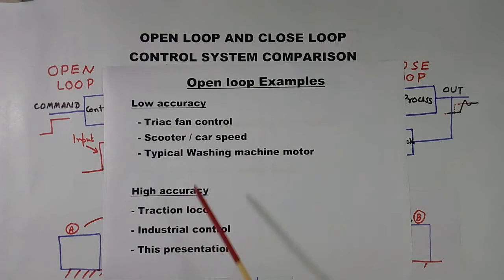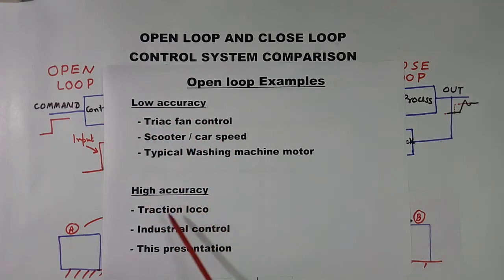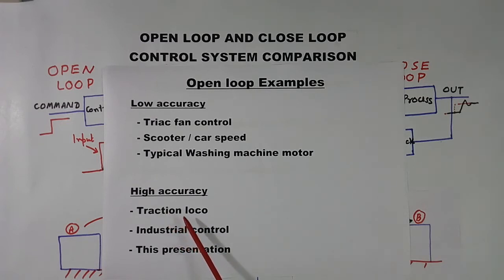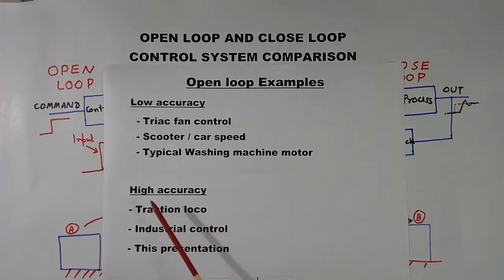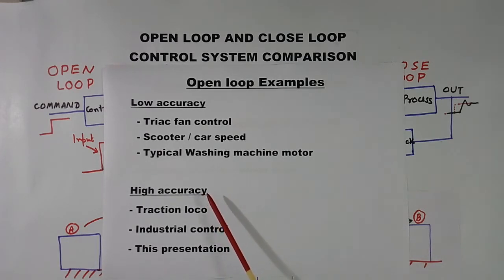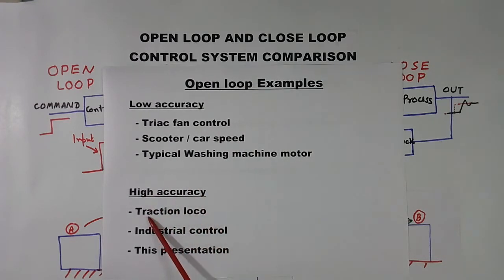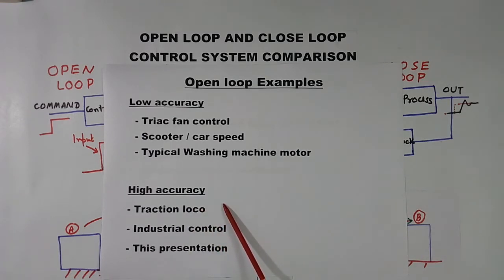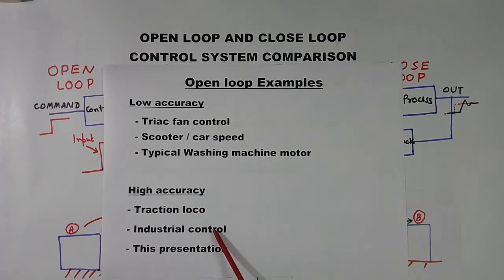High accuracy, this I told example of low accuracy. These are high accuracy. Traction loco in trains. Engine will be there. Those tractions are very high accuracy type. And they have open loop and closed loop both. Because here open loop I am writing, so I am telling open loop have very high accuracy in traction loco. They have closed loop control also. Industrial control also, they require high accuracy. They have open and closed loop both. Closed loop brings accuracy, but open loop type also is high accuracy type. So they are complex systems in order to use the case. Similarly this presentation.